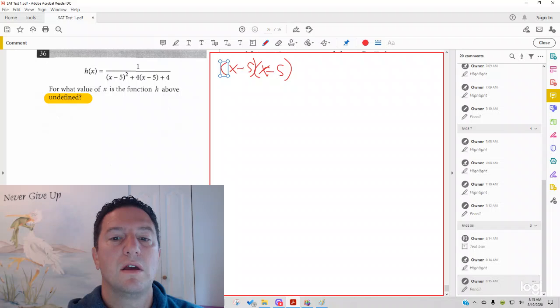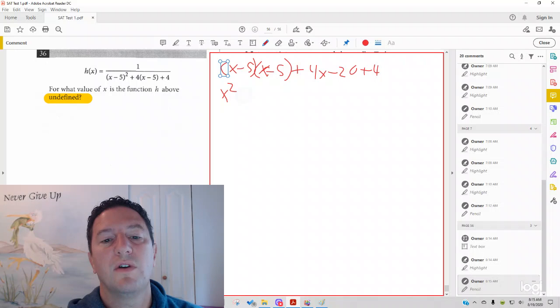And then you'd be foiling. Plus 4. I could distribute that 4. I get 4x minus 20, plus 4. Foiling over here, I get x squared. And then you get minus 5x minus 5x.